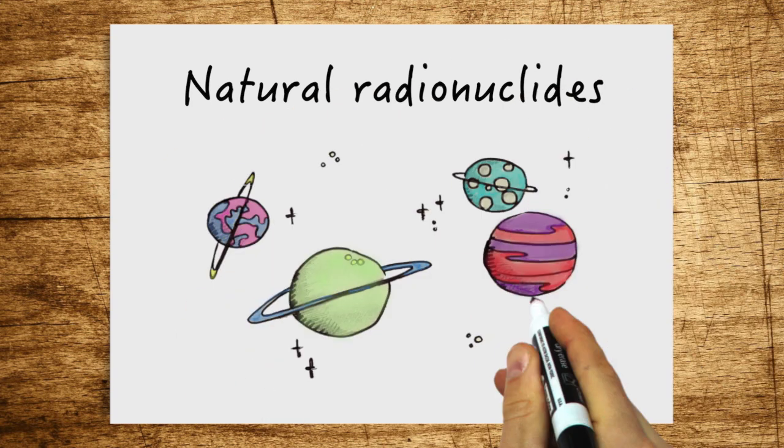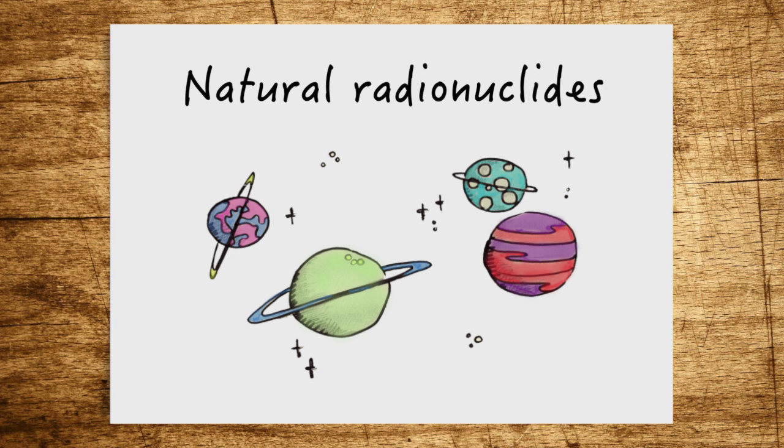The other natural radionuclides were already formed when the universe came into being. Hence, they were already around when our planet Earth originated. Here on Earth, there will be no new nuclei of this type.